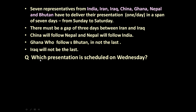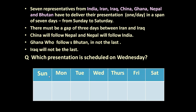Here we have taken the question: which presentation is scheduled on Wednesday? Based on this information, let us first draw a table from Sunday to Saturday — Sunday, Monday, Tuesday, Wednesday, Thursday, Friday, and Saturday. Now, whatever information is given, we must fill all that information into this table.